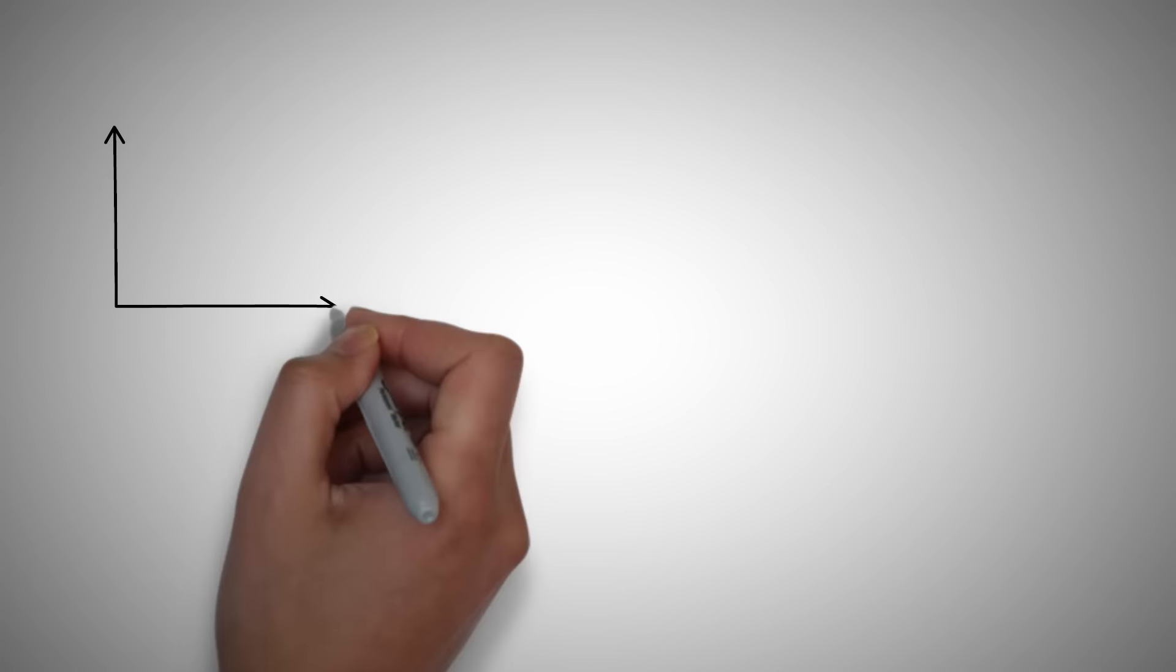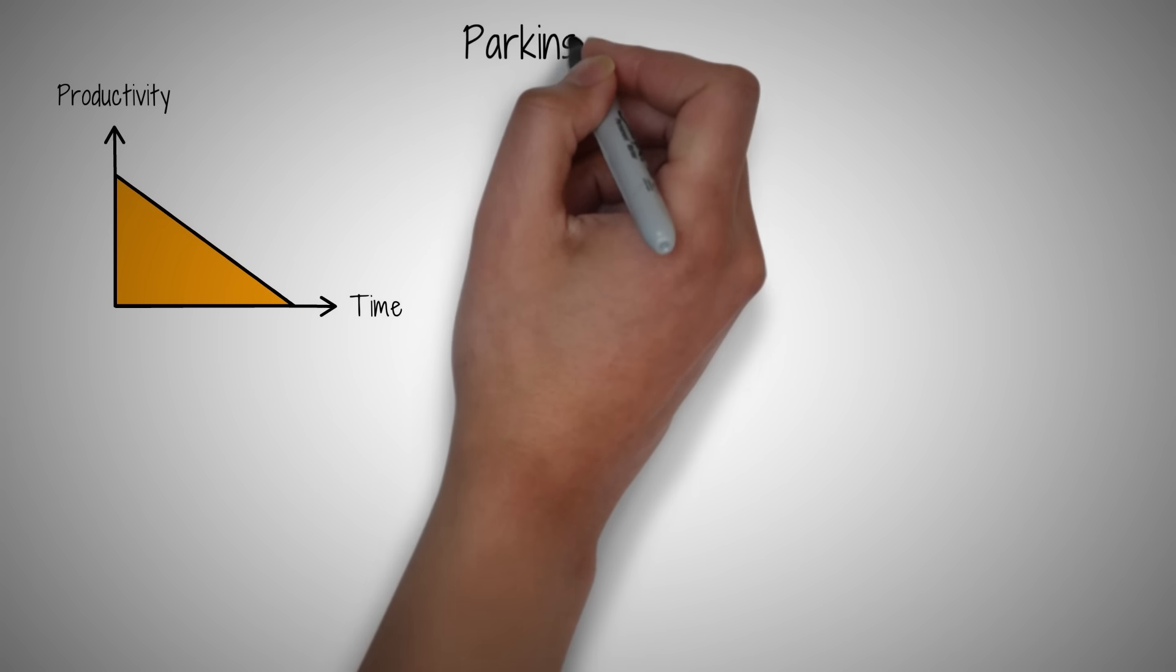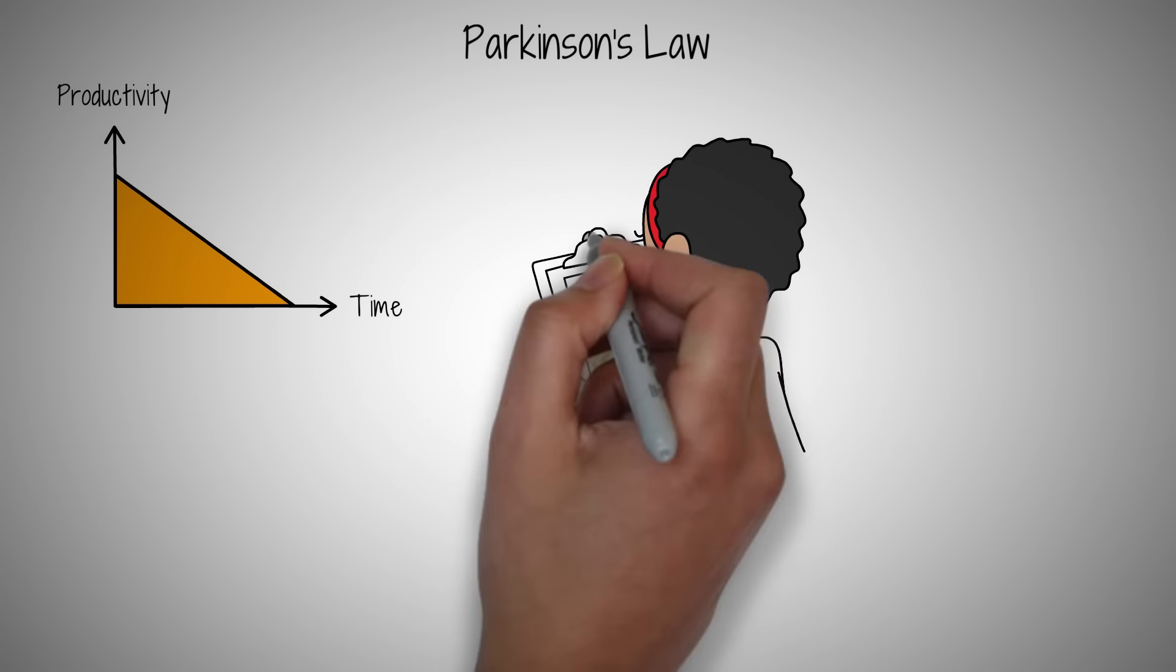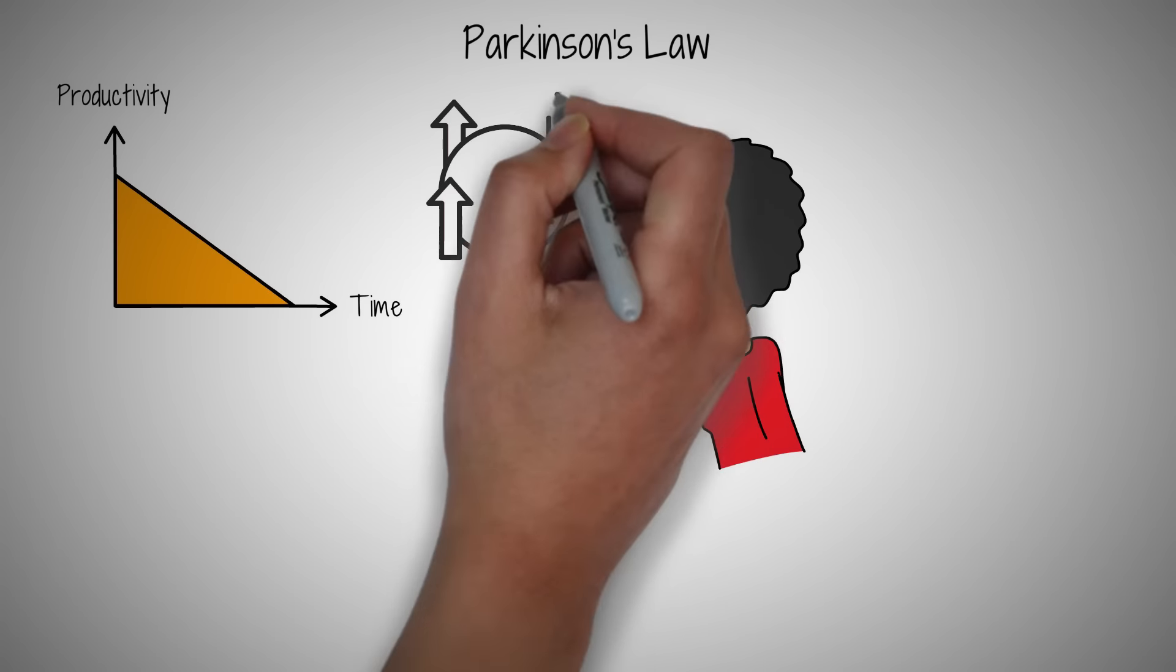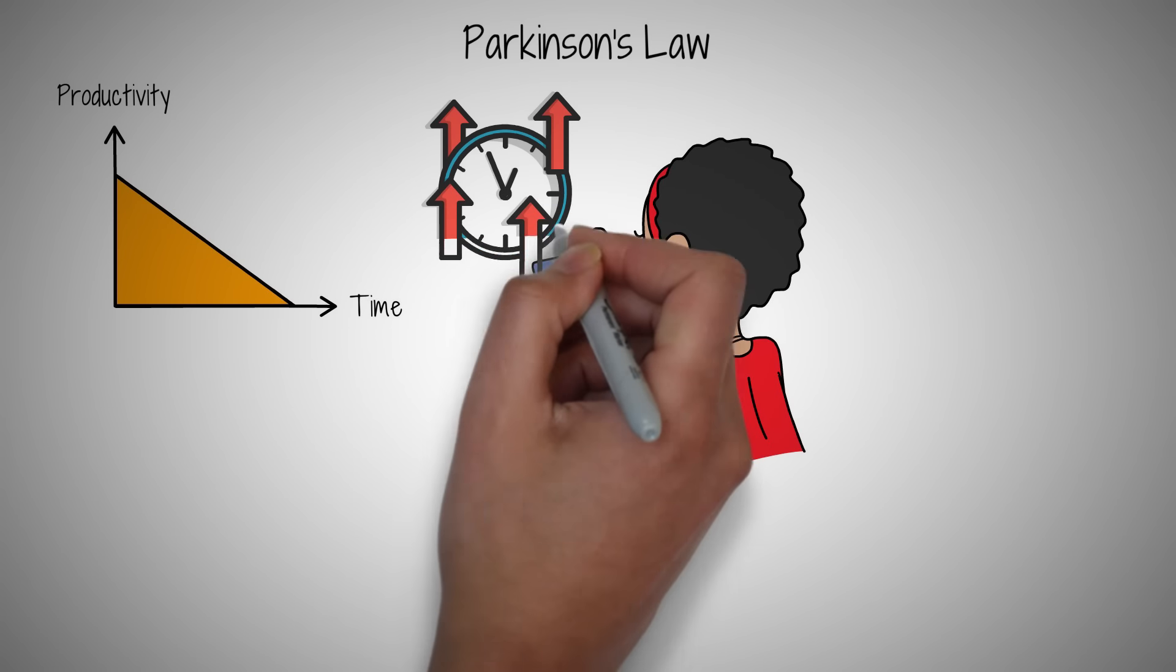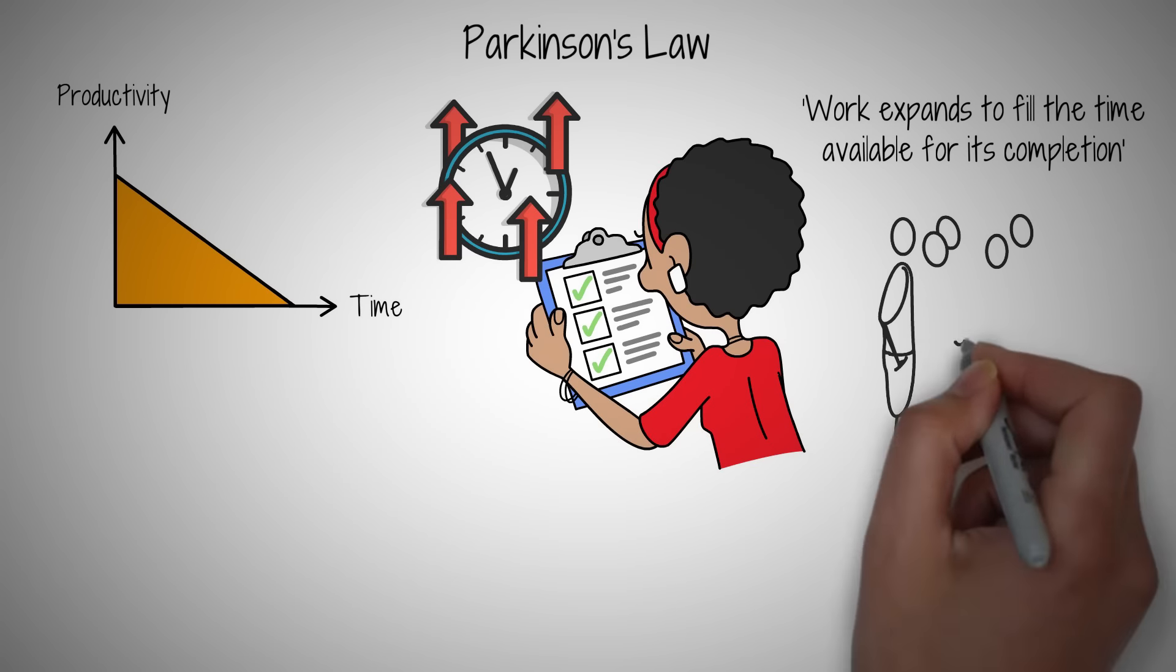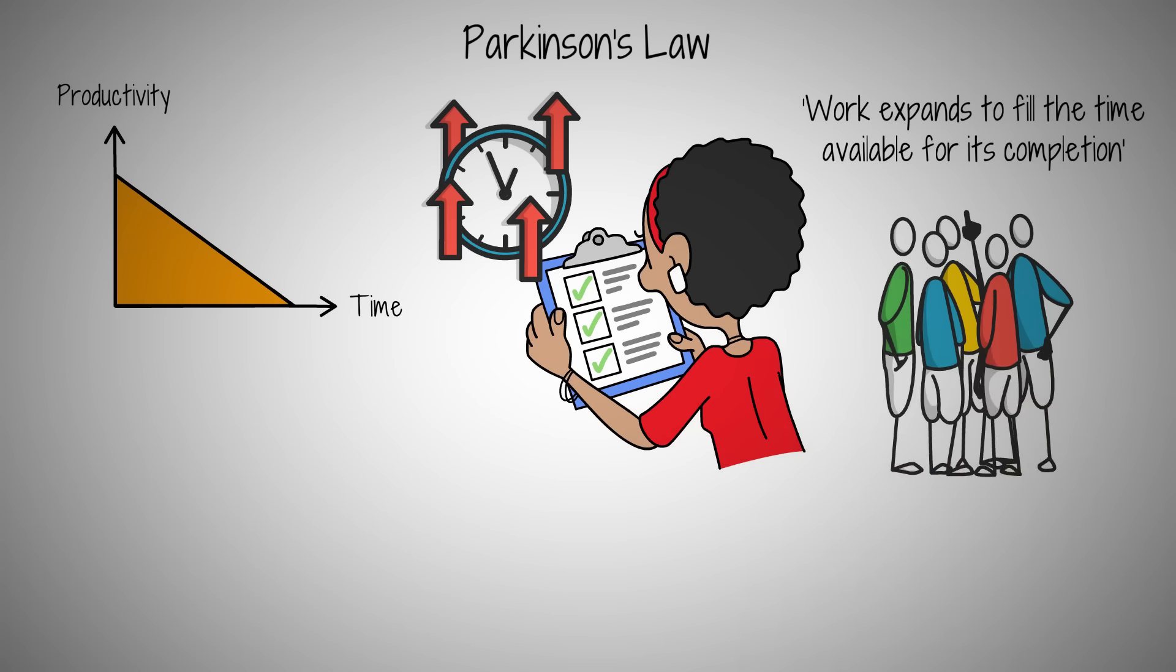Ever noticed how tasks expand to fill the time we allocate to them? This isn't just your imagination. It's a phenomenon called Parkinson's Law. Think about the last time you had a whole day to do something that realistically only needed a few hours. Chances are it took you the entire day, right? Parkinson's Law states that work expands to fill the time available for its completion. A classic example is the preparation for a meeting. Given a week to prepare, the task will stretch out to consume the whole week, often with last-minute rushes.